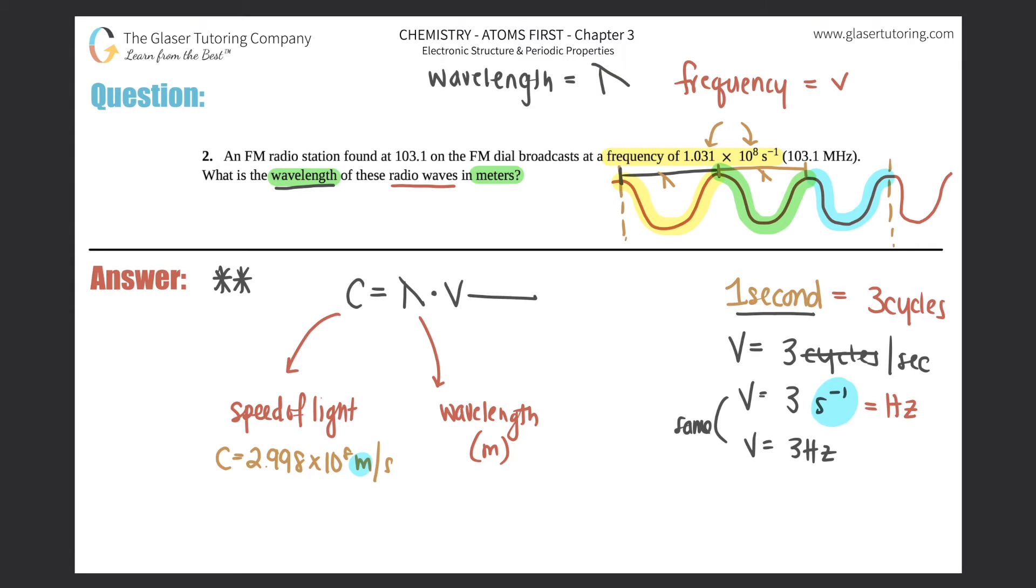And V, like we said before, is frequency. And the units for frequency is either seconds to the minus one, one over seconds, or it can be hertz because they're exactly the same thing. So I'm going to use this formula to plug in for frequency, use my speed of light constant, the 2.998 times 10 to the eighth meters per second to find out the wavelength. So let's get to it.